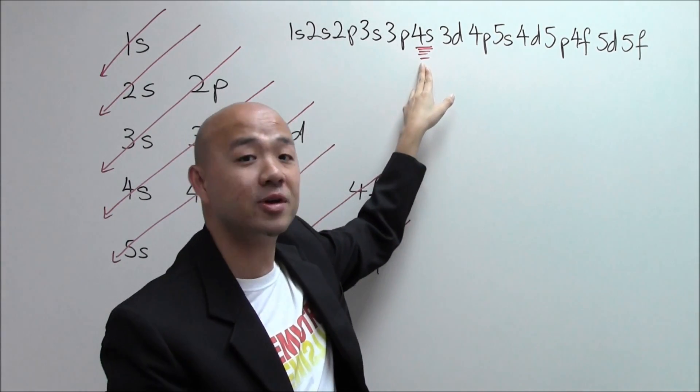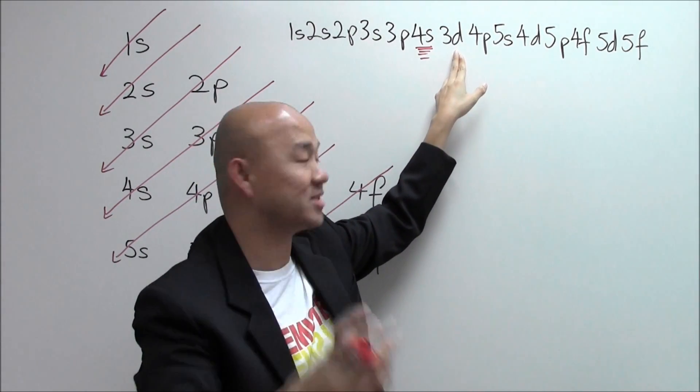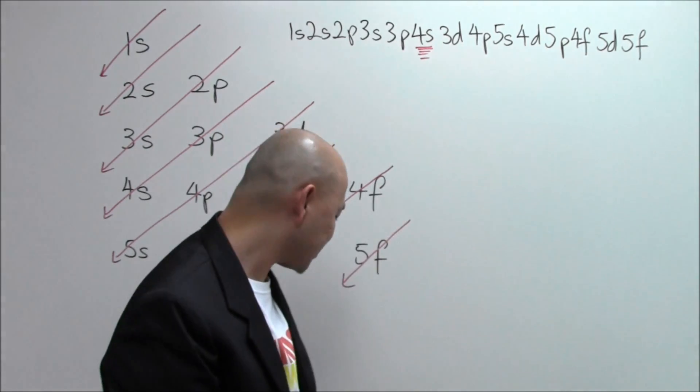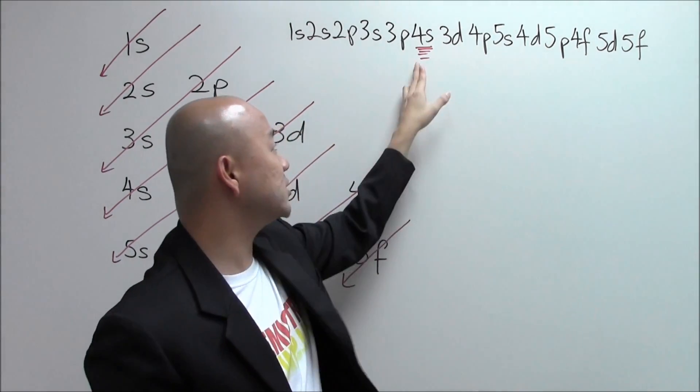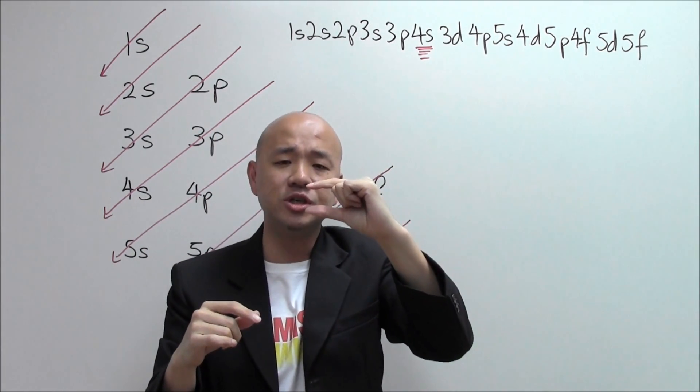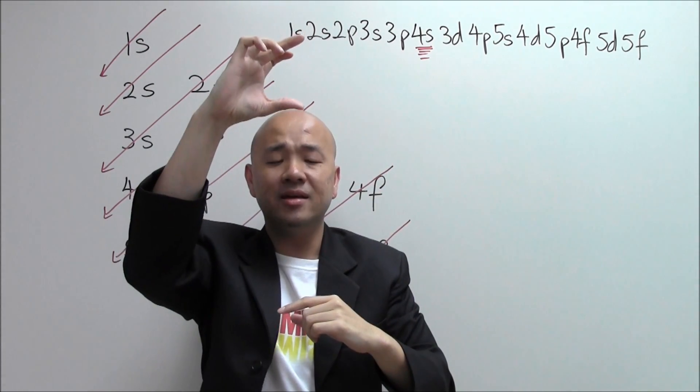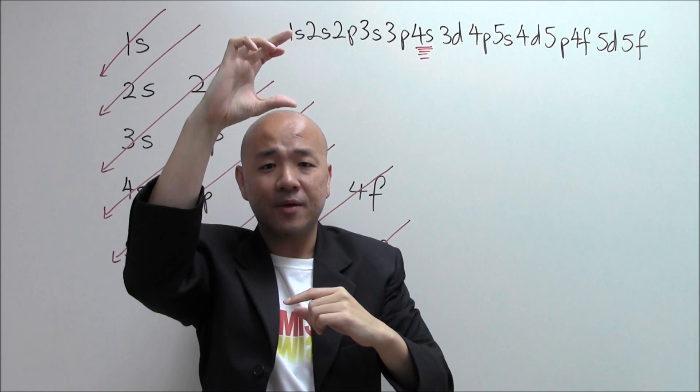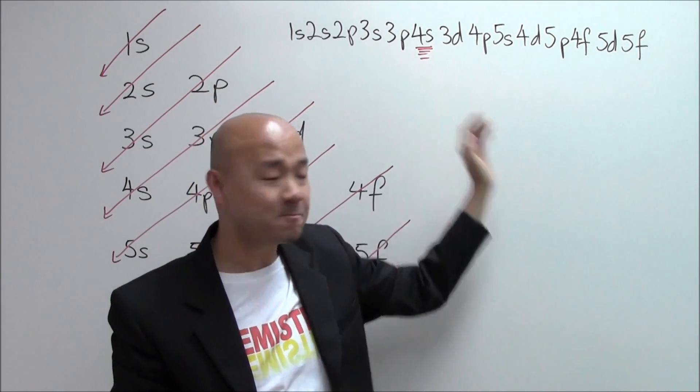And that's why we need to fill 4s up first before the electrons go inside the 3d orbitals. Now this is true because the 4s subshells, the orbitals are actually at lower energy compared to the 3d orbitals, and that's the reason why it comes first.